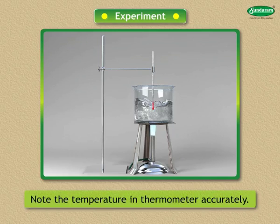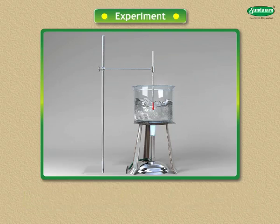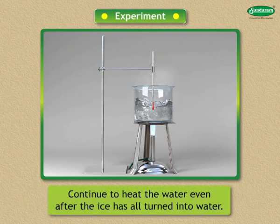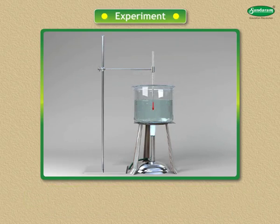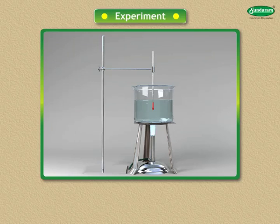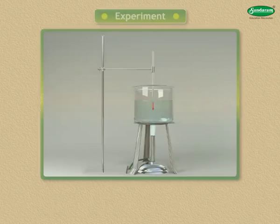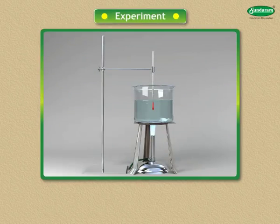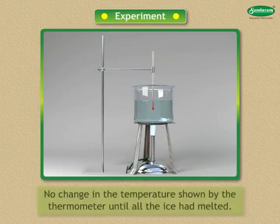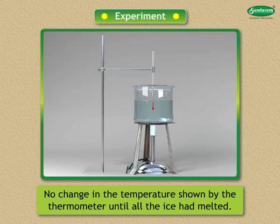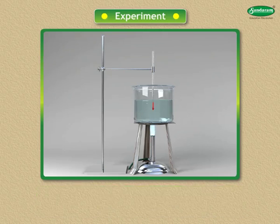Make a note of the level of the mercury in the thermometer at minute intervals. Continue to heat the water even after the ice has all turned into water. Do not forget to record your observations. What did you observe? Even though heat was being supplied to the beaker, there was no change in the temperature shown by the thermometer until all the ice had melted.